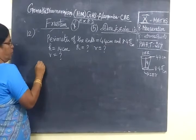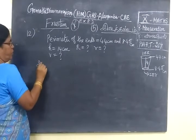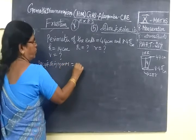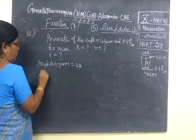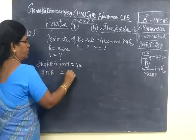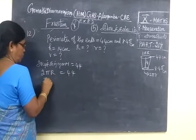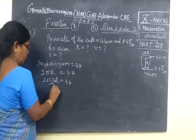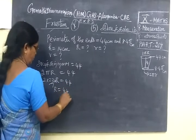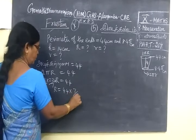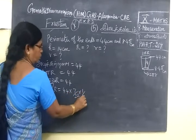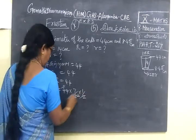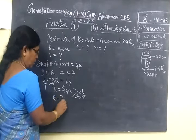So, 2πR equals to 44 cm. 2 into 22 by 7 into R equals to 44. So R equals to 44 times 7 by 22 times 1 by 2. You can cancel 2 times. If you cancel, R equals to 7 cm.